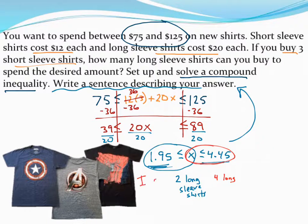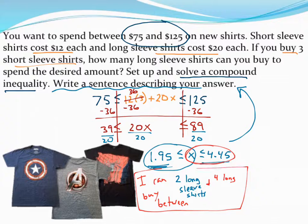So I'm going to say I can buy, and then I'll just say, between 2 long-sleeved shirts and 4 short-sleeved shirts. And so if you can kind of piece this together to make a sentence out of them, I'm not going to rewrite the whole thing, that's going to be the sentence that describes this.